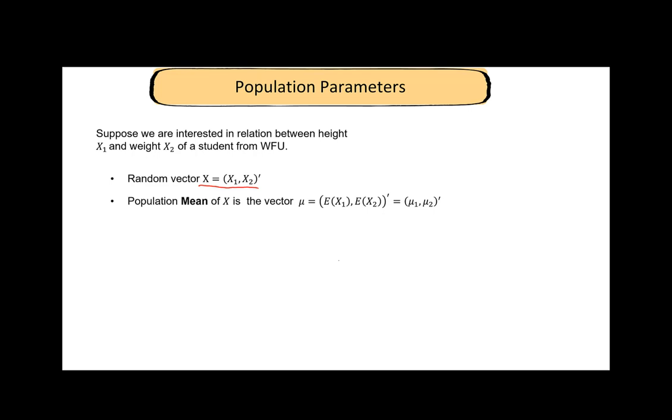The mean of this vector, again denoted by mu, is just a vector where the first element is expectation of X1 and the second element is expectation of X2. We take mean of the individual variables and we put them together in a vector.